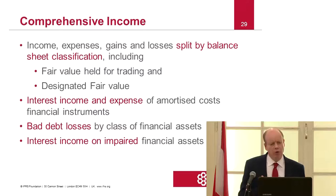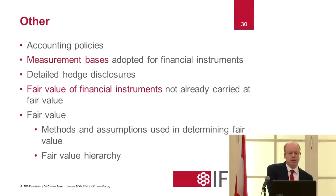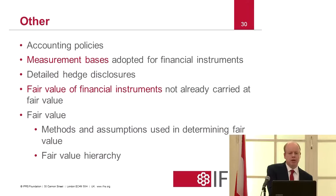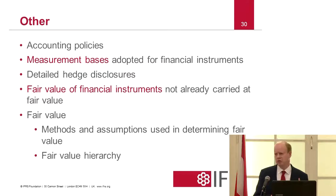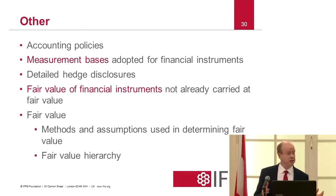There are also disclosures on bad debt losses and interest income on impaired financial assets. Accounting policies tend to be very voluminous and quite boilerplate. One of the things we're now trying to encourage banks and others to do is to have accounting policies which are very focused, relevant to the entity's business, and don't address aspects which aren't relevant — to give a picture of what it all means for that bank specifically rather than some generic statement of policy.